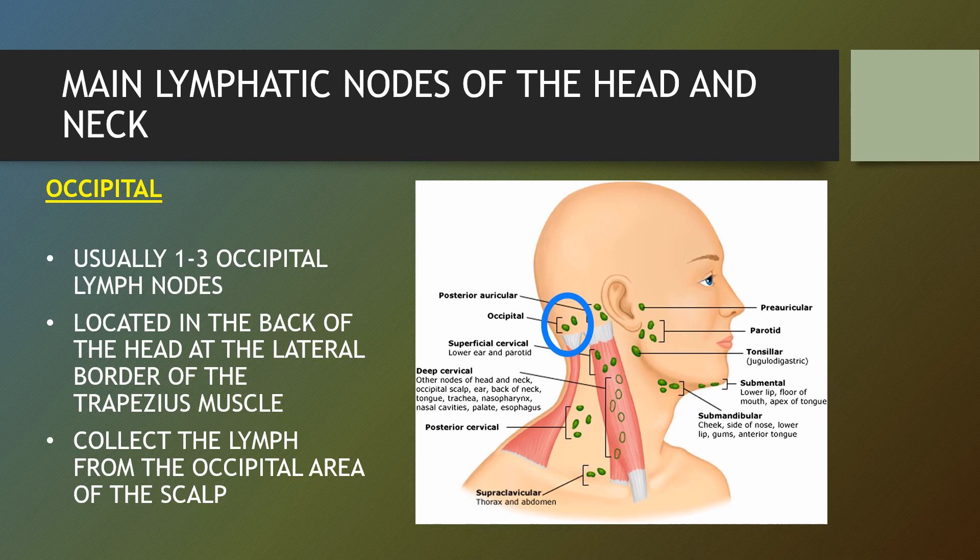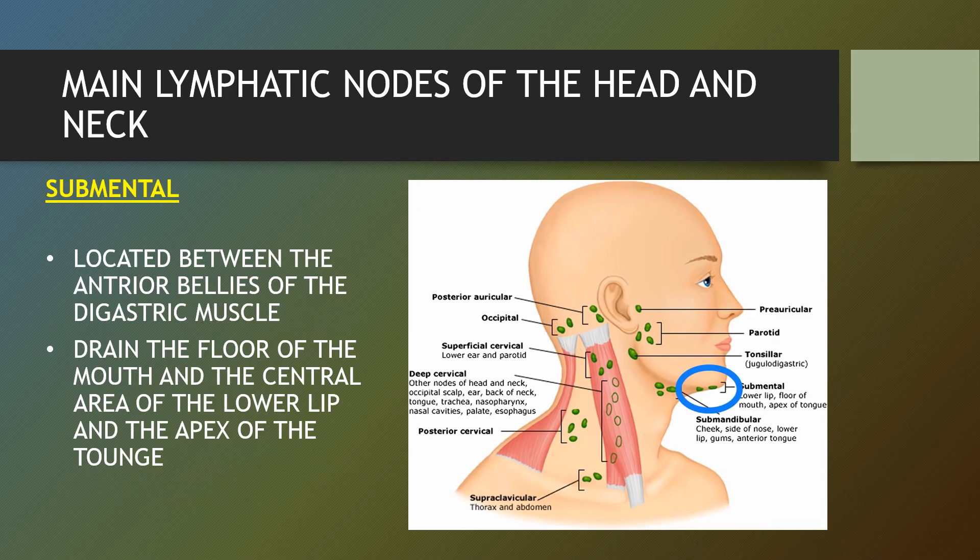The occipital lymph nodes are located in the back of the head near the occipital bone of the skull, usually one to three occipital lymph nodes. Much like other lymph nodes located throughout the body, the occipital lymph nodes play an active role in the body's immune defence system and collect the lymph from the occipital area of the scalp. Submental nodes are located between the anterior bellies of the digastric muscle and drain the floor of the mouth, the central area of the lower lip and the apex of the tongue. Swollen lymph nodes under the jaw or on either side of the neck may hurt when you turn your head in a certain way or when you're chewing food, and they can often be felt by running your hand over your neck just below your jawline.